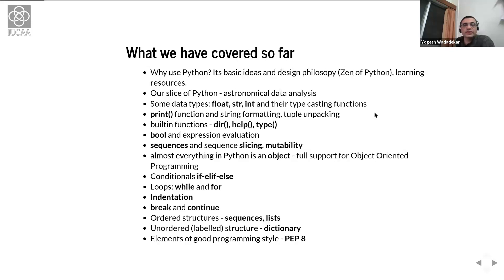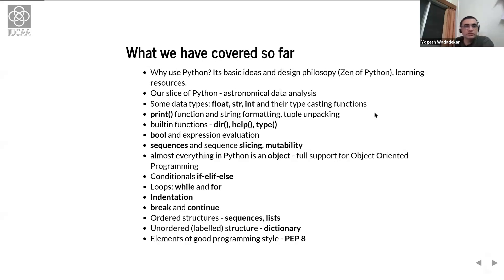In that context, we looked at tuple unpacking, where multiple values can be assigned to different variables in one line. We looked at built-in functions like `dir`, `help`, `type`, and so on. Then we looked at the Boolean data type, which evaluates only to two values — true or false — and how expressions can be evaluated to either true or false in a Boolean context.